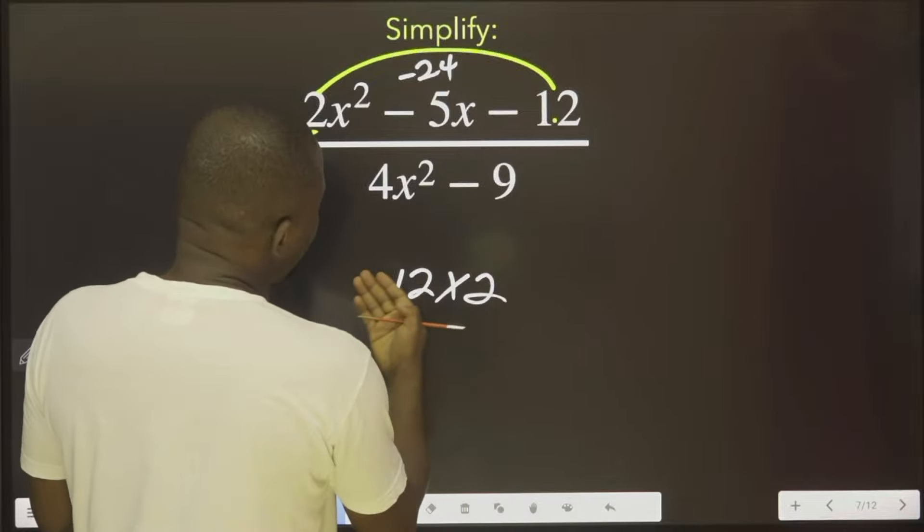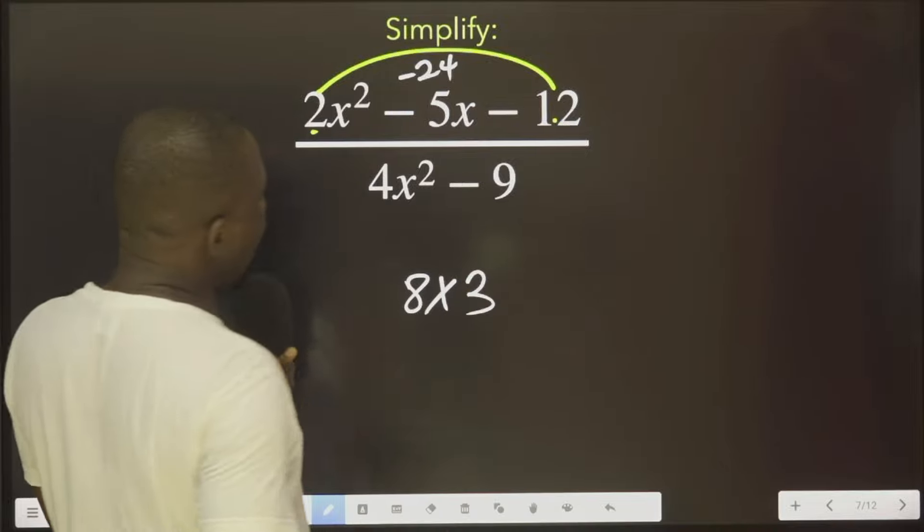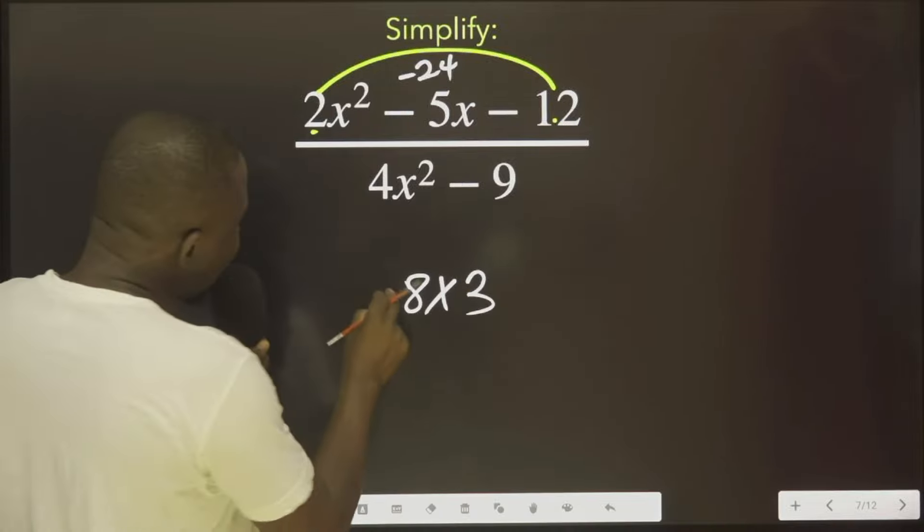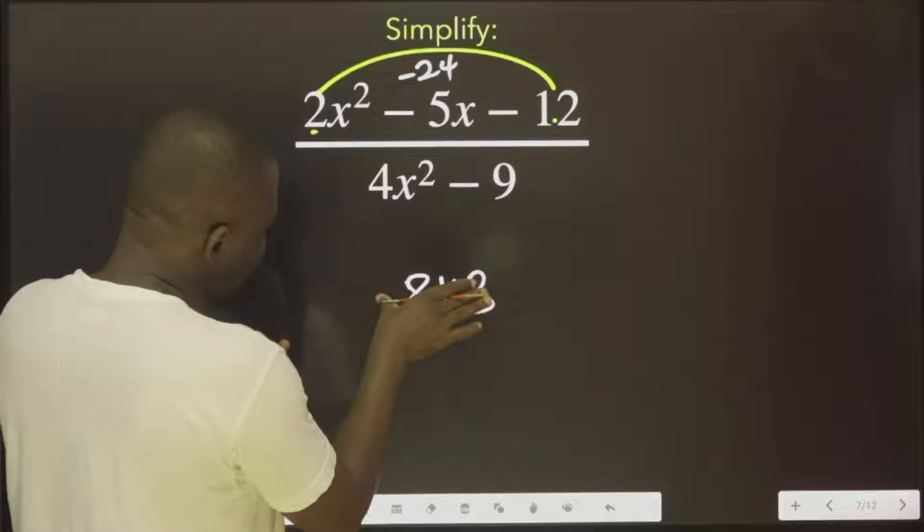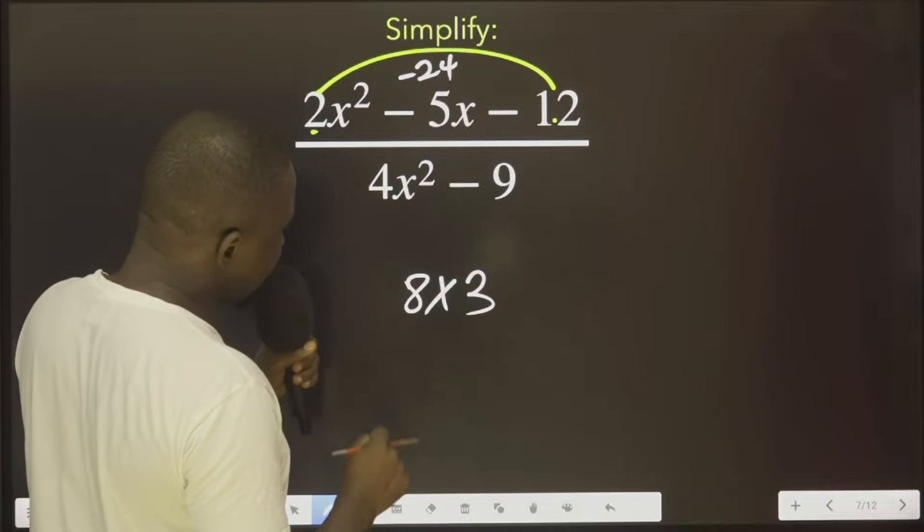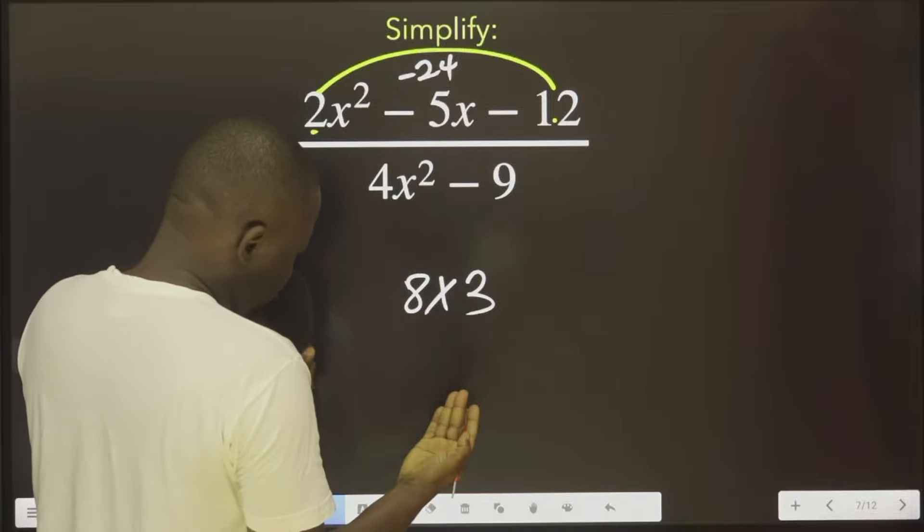I will do 8 times 3. I'm getting there. 8 times 3 will give me 24. And there is something I can do to get this. That is 8 minus 3.